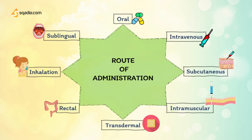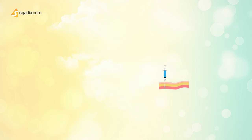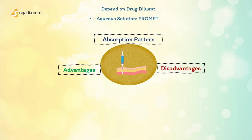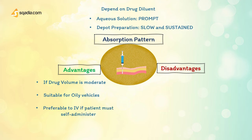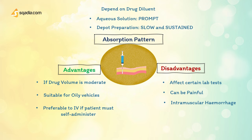Next is the intramuscular route. Its absorption pattern depends on the drug diluent — aqueous solutions are prompt, depot preparations are slow and sustained. Advantages include suitability when drug volume is moderate, suitable for oily vehicles and certain irritating substances, and preferable to intravenous if the patient must self-administer. Disadvantages include affecting certain lab tests such as creatine kinase, it can be painful, can cause intramuscular hemorrhage, and is precluded during anticoagulation therapy.